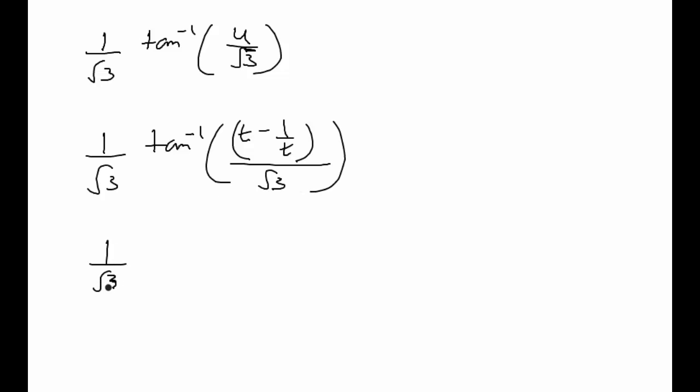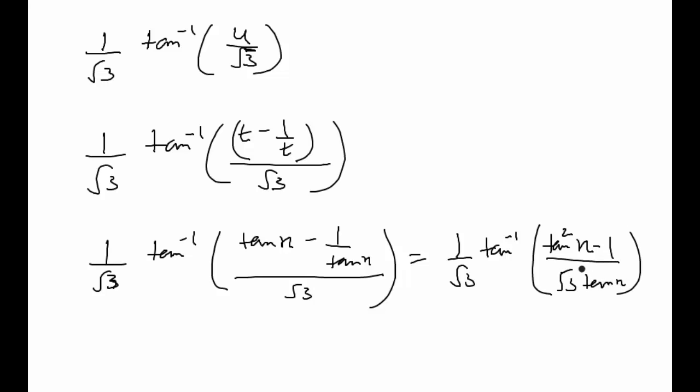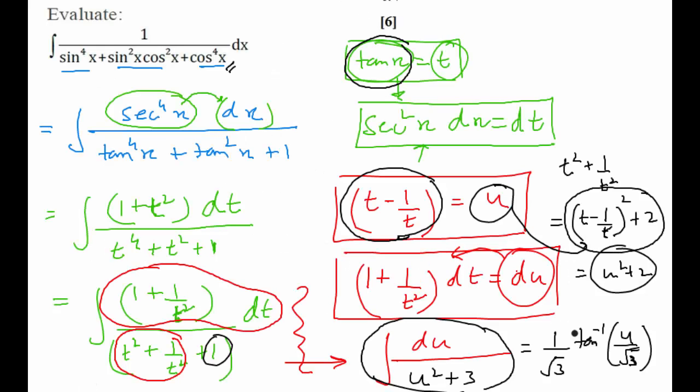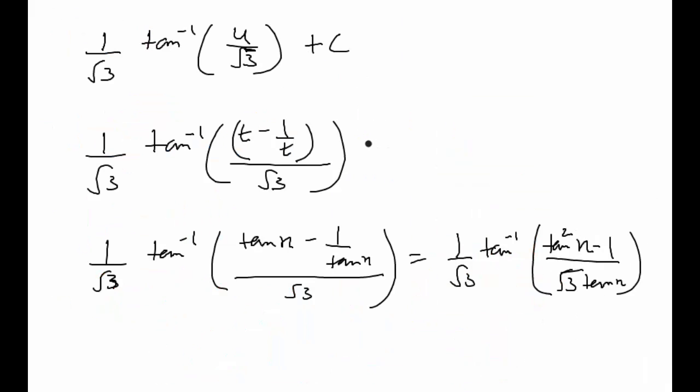Okay, so something like this will happen. Our answer right now is 1 by root 3 tan inverse of u upon root 3. Then when I substitute back value of u, it will become tan inverse of t minus 1 upon t upon root 3. And then when I further substitute value of t as tan x, I will get tan x minus 1 upon tan x upon root 3, which can be written as 1 by root 3 tan inverse of tan square x minus 1 upon root 3 tan x. And since we are doing indefinite integration, in every step, you can just add some arbitrary constant. So if you add arbitrary constants everywhere, your arbitrary constant will reflect in the last step also. This is the final integral.